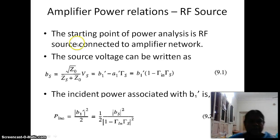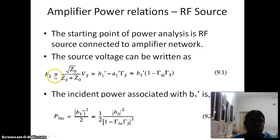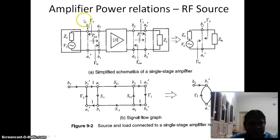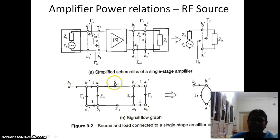Now we will correlate this to our RF amplifier power relations. The starting point of the power analysis is an RF source connected to an amplifier network. The source voltage Bs can be written as root of Z0 divided by (Zs + Z0) times Bs. From the signal flow graph, we can write it as B1' minus A1' times gamma_S. In the diagram, there are four reflection coefficients: gamma_S at the source, gamma_in at the input, gamma_out at the output, and gamma_L at the load.